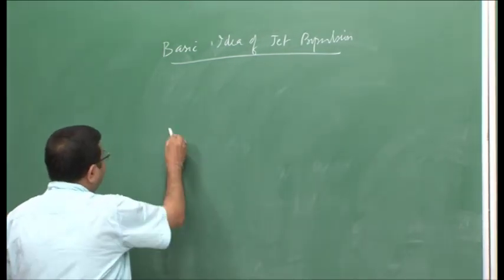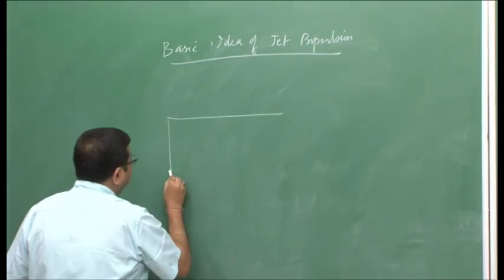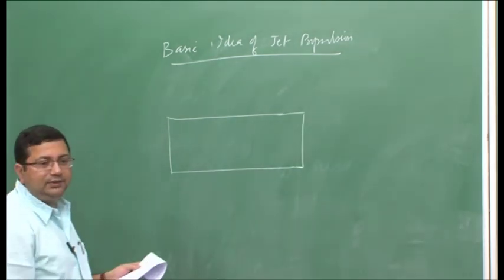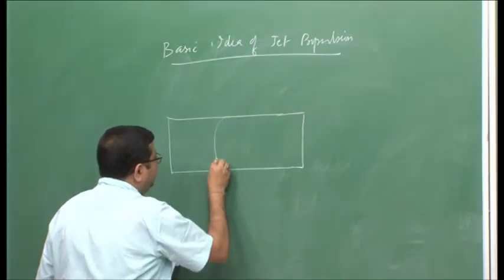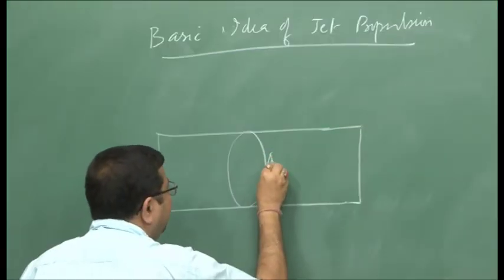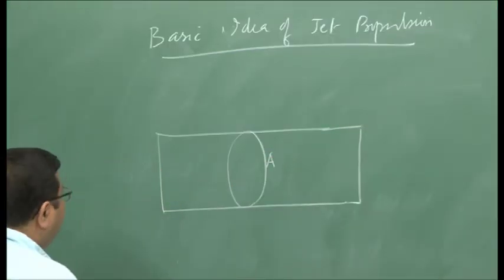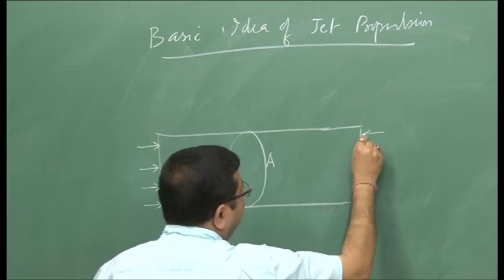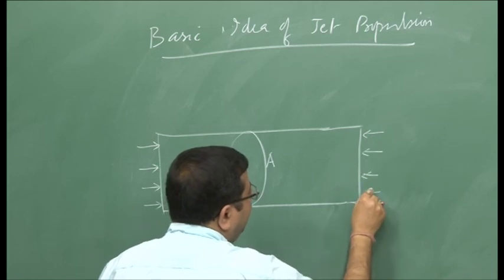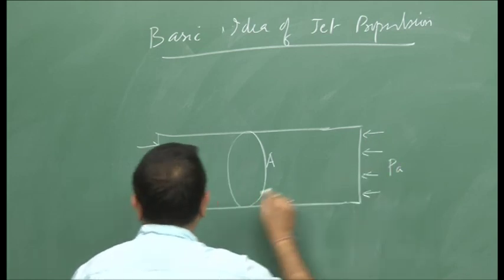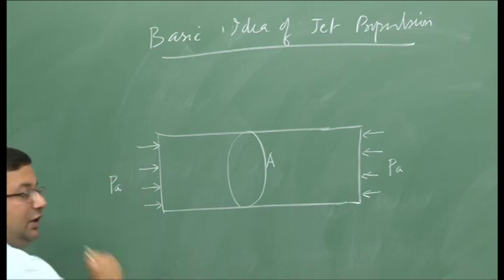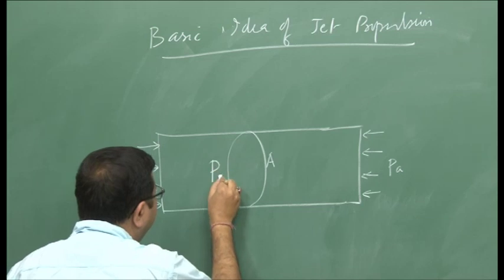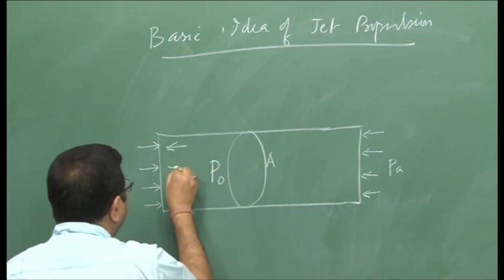Let us consider that we have a tube which is closed at both ends. The cross-sectional area of this tube is A, and it is kept in atmosphere. The atmospheric pressure P_a is acting on all sides of this tube. Now, let us say that we maintain a very high pressure P_naught inside this tube.